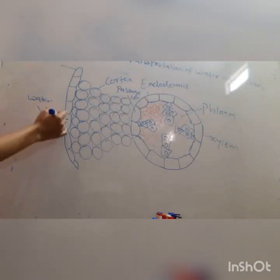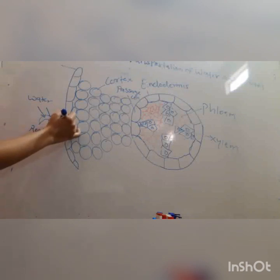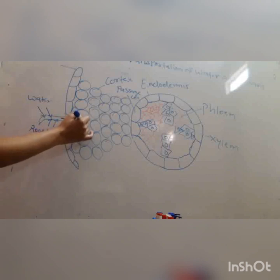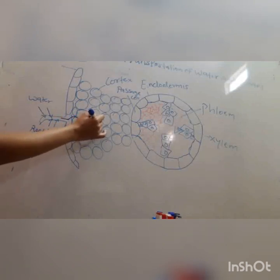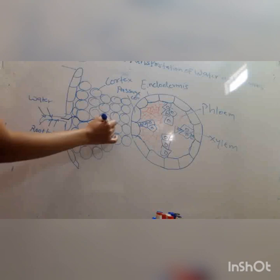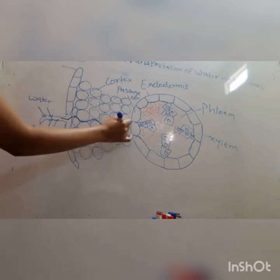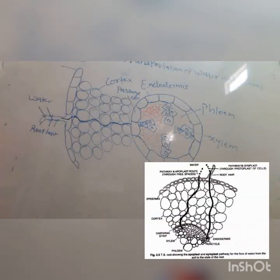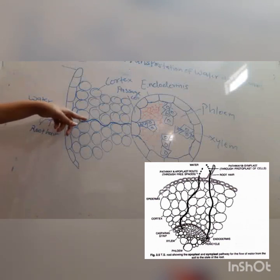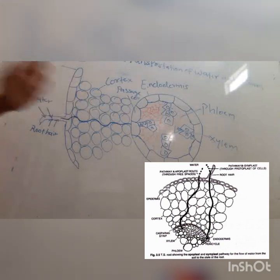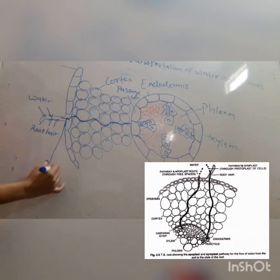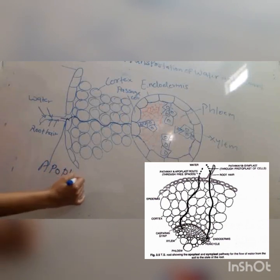When water enters the epidermis, it will move into the intercellular space, then the cell, then the intercellular space, then the cell, alternating between intercellular space and cells, coming towards the endodermis. When water is moving through the intercellular space and touching the cells, this type of movement is known as apoplastic movement.